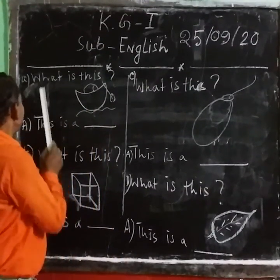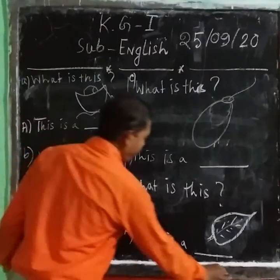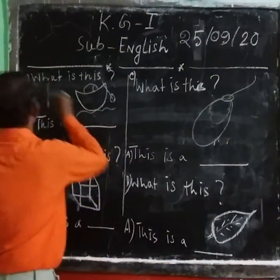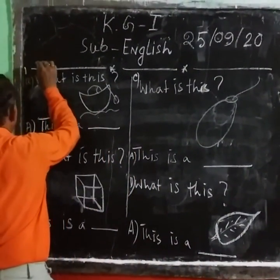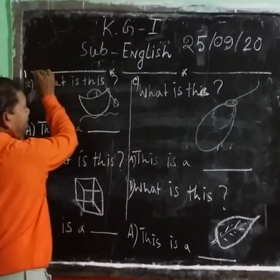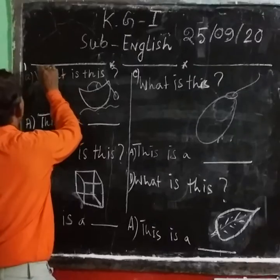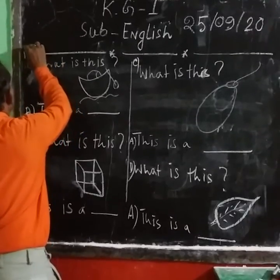Now let's turn to the numbers. Number one. What do you think is number one? The number is on your left arm. The number is the left key.